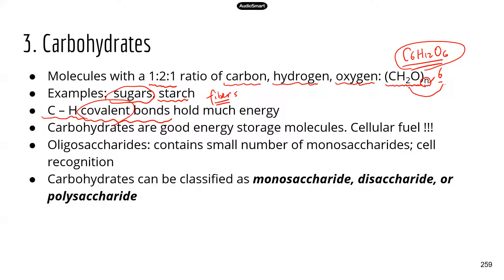That's why carbohydrates are perfect molecules for storing energy. When we eat, we get carbohydrates from food, and our body breaks them down. The energy in the carbon-hydrogen covalent bonds is released, and this is how we get our energy every day — because we need about 2,000 calories of energy daily. If we have excess energy, we are going to store that energy in carbohydrate molecules.